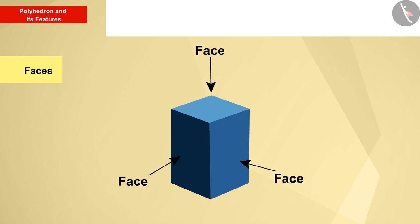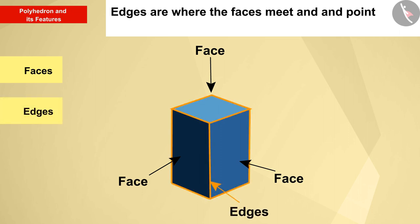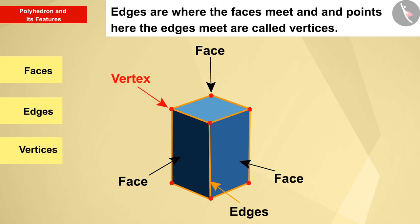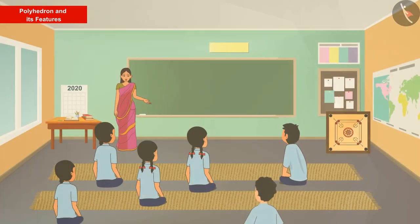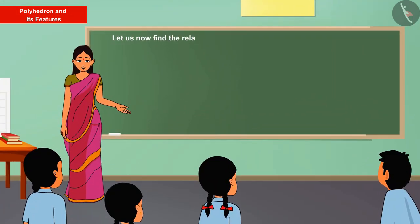Perfect. The edges are where the faces meet and the points where the edges meet are called vertices. Let us now find the relation between the faces, edges and vertices of a polyhedron with the help of an example.